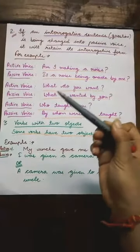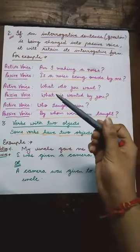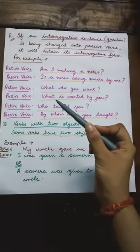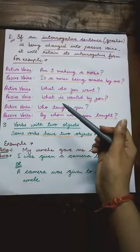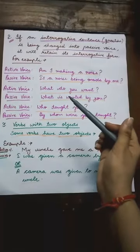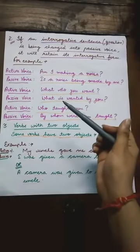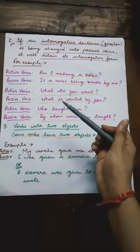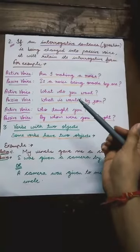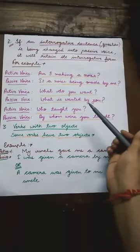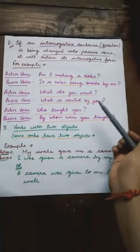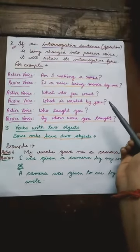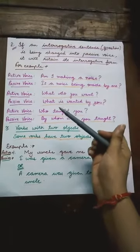Next example: 'What do you want?' Passive sentence में: सबसे पहले interrogative word 'what' as it is लिख दिया. After that, simple present tense है और जो thing मांग रहा है वो singular है, इसलिए 'is' use हुआ. Then verb की third form 'wanted'. Then 'by', then object 'you'. At last question mark. So the sentence will be: 'What is wanted by you?'